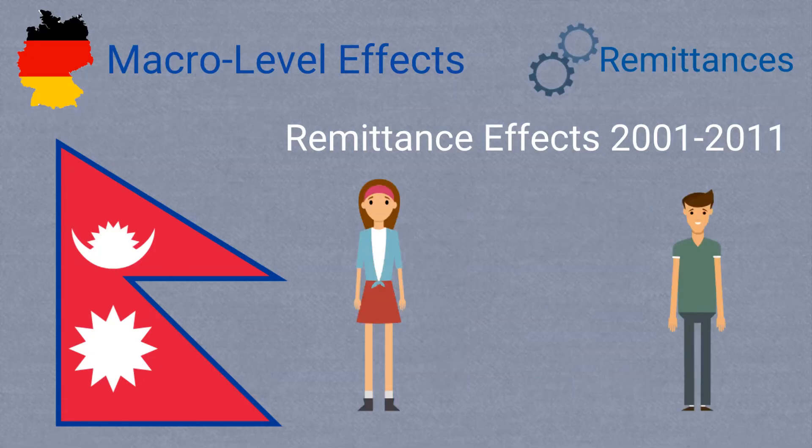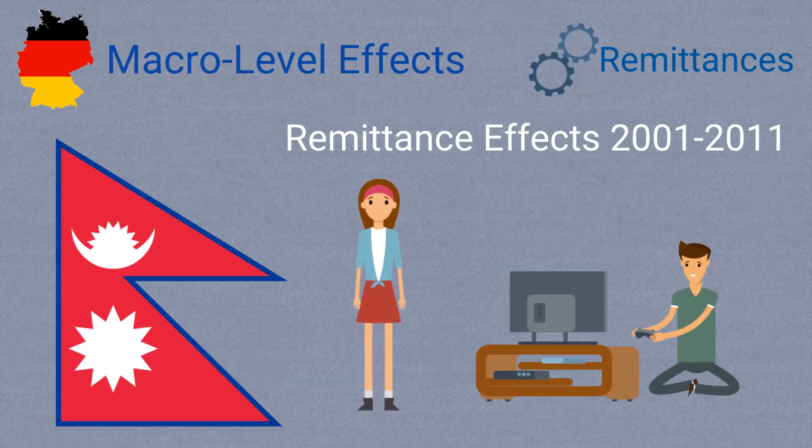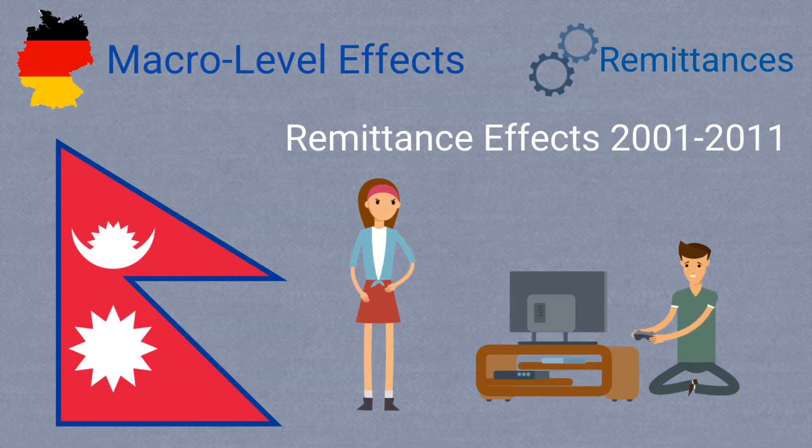However, there were gender differences with these effects. While women were generally observed to be engaging in more self-employment, men on the other hand were seen to be increasing their leisure time. This is an example of what economists call moral hazard.